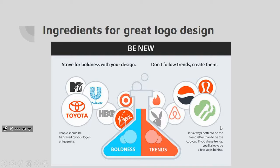Another ingredient that makes a great logo is being new — strive for boldness. The MTV logo is very unique, very bold in its design, and catches the eye. Don't follow trends — create them. The Girl Scout logo and Airbnb are really cool representations of this; they've created their own method of making a logo without copying any other idea, and that makes them successful.